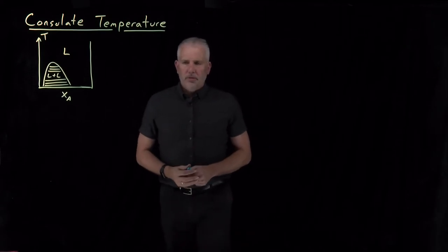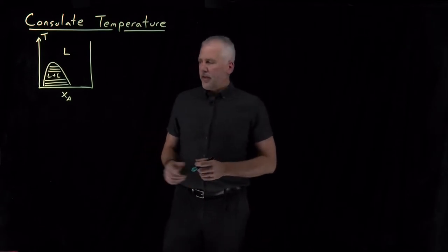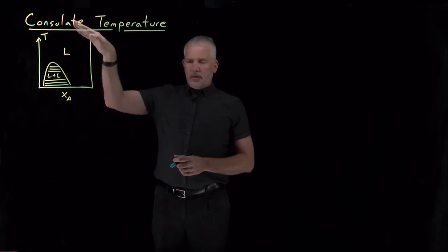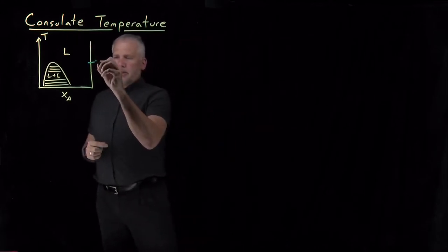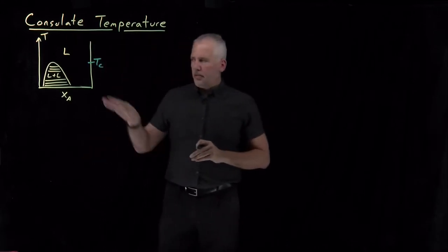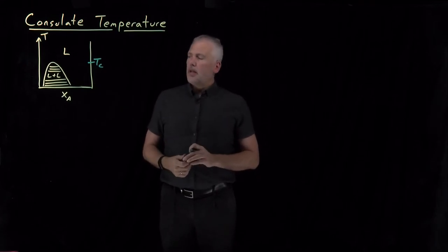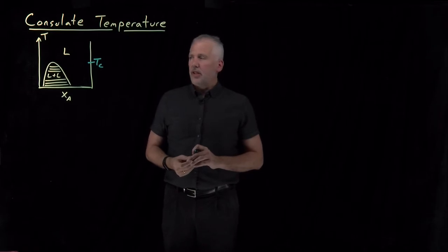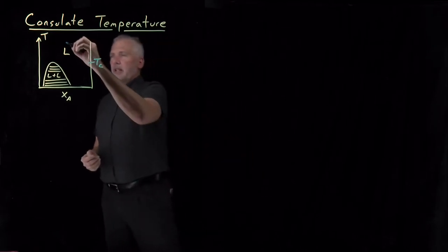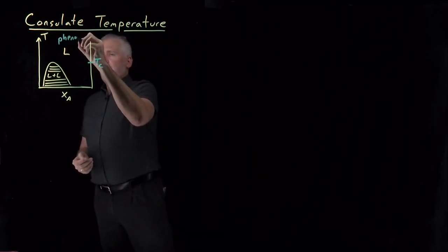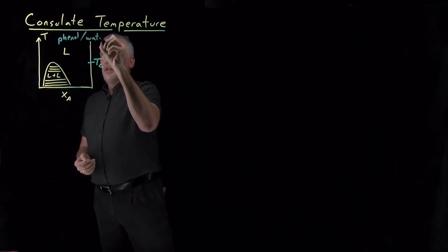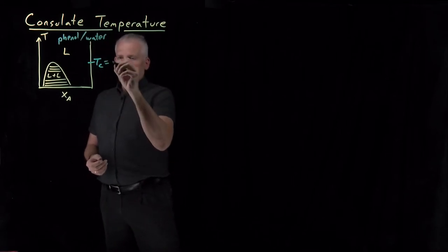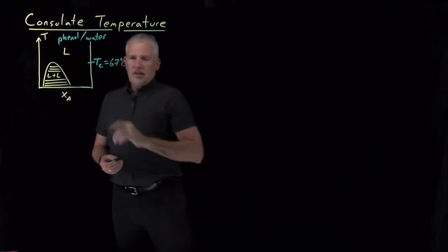For a pair of partially miscible solvents, if I have a solvent A and a solvent B that are miscible above some temperature called the consulate temperature and immiscible below that temperature in some concentrations, then the phase diagram looks like this, as we've talked about previously. For example, in a case like phenol with water, this consulate temperature is around 67 Celsius.